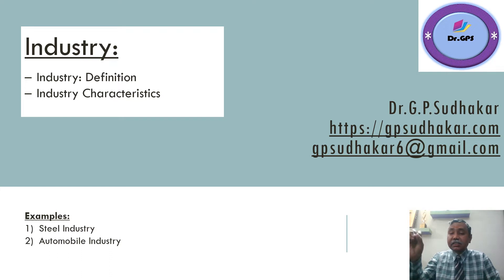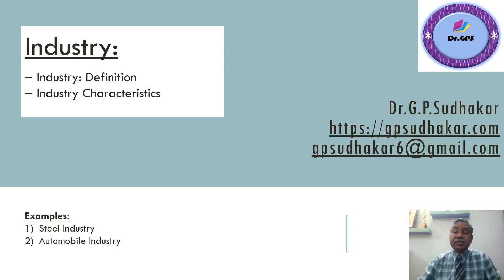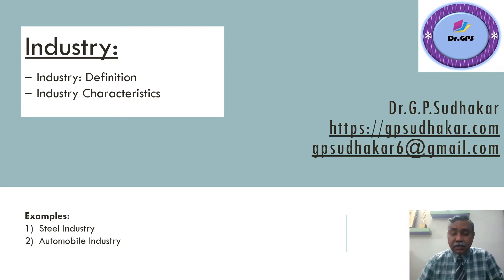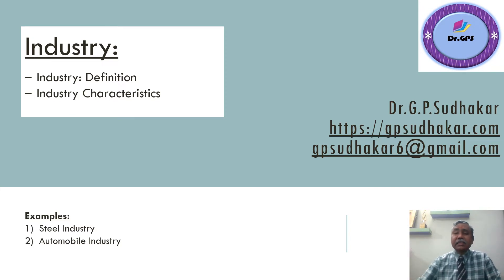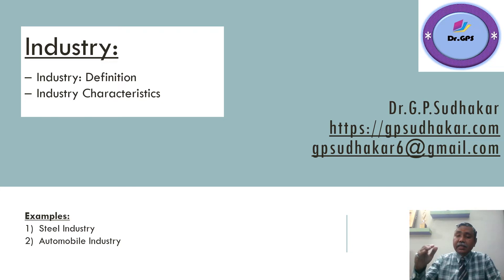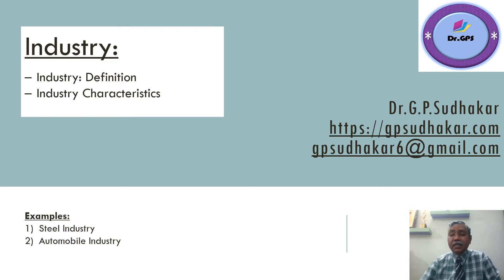Or construction industry, automobile industry — particularly automobile industry produces similar products in a specific area. Like these, different industries are possible across the world. So what are the characteristics of an industry? Basically, many players will be there in an industry.